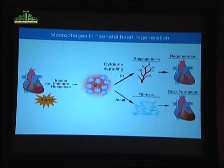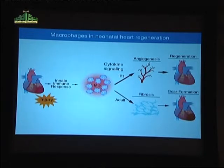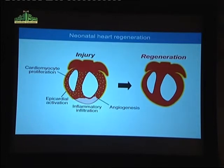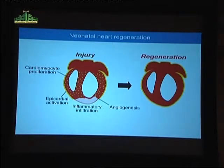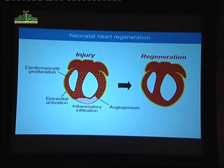In the adult heart, this step is blocked. There's a different spectrum of macrophages that infiltrate the heart and a different constellation of cytokines released, which we think drives fibrosis. One of the other important steps in neonatal heart regeneration is that cardiac muscle cells are induced to proliferate across the organ, and very little is known about mechanisms that can drive proliferation of cardiac muscle cells.